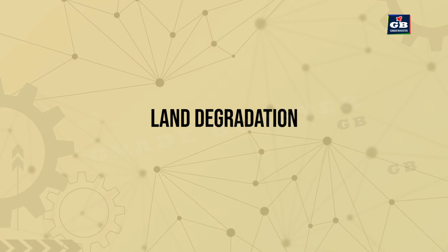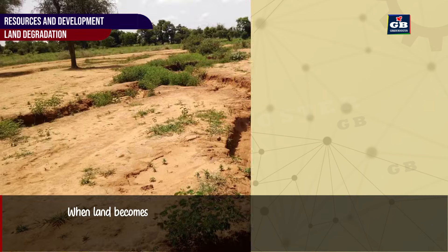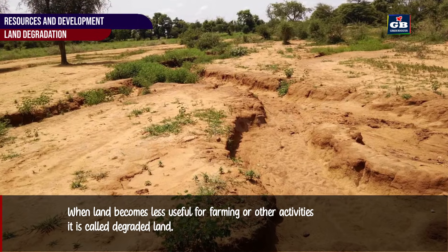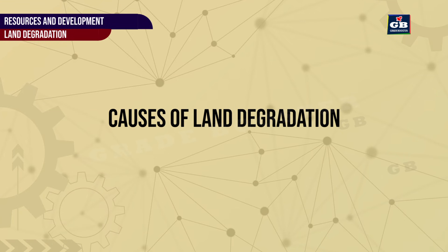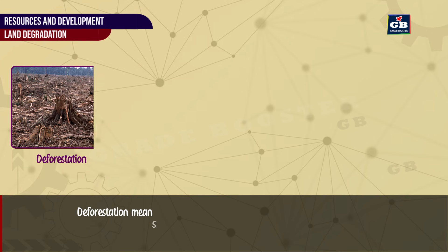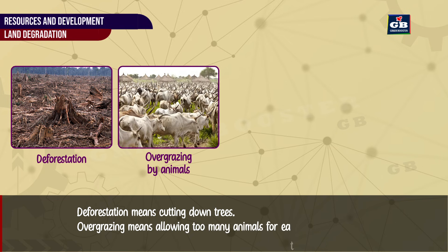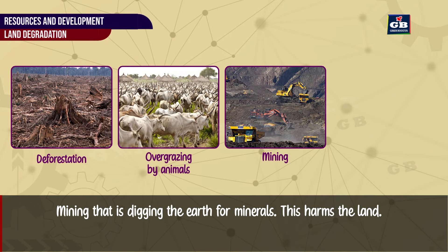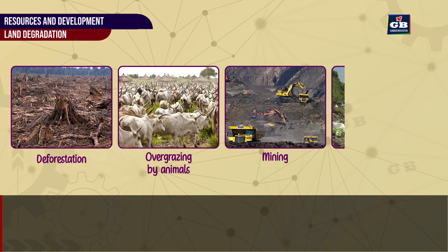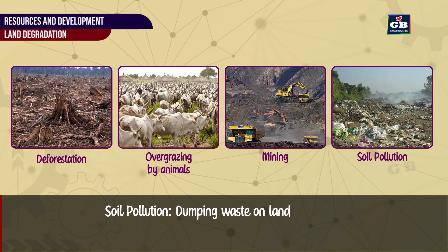Land Degradation. When land becomes less useful for farming or other activities, it is called degraded land. The causes of land degradation are: 1. Deforestation — cutting down trees. 2. Overgrazing — allowing too many animals to eat the grass. 3. Mining — digging the earth for minerals, which harms the land. 4. Soil pollution — dumping waste on land.